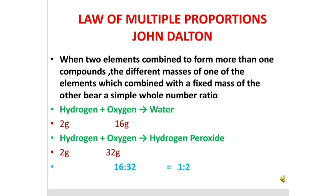For example, hydrogen and oxygen combine to form water, where 2 grams of hydrogen combines with 16 grams of oxygen. When hydrogen and oxygen combine to form hydrogen peroxide, 2 grams of hydrogen combines with 32 grams of oxygen. The mass of hydrogen is fixed, but the mass of oxygen differs.